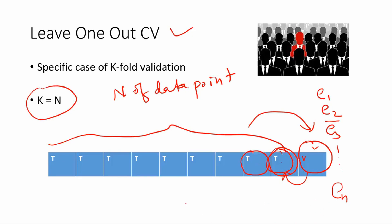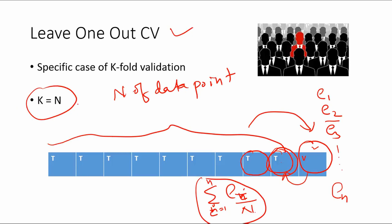The average error would be the sum of errors from i=1 to n, divided by n. The average of the errors is the prediction error for the future. Just remember that this is exactly the same as k-fold cross-validation, except that k in this case is the same as the number of data points in your sample.